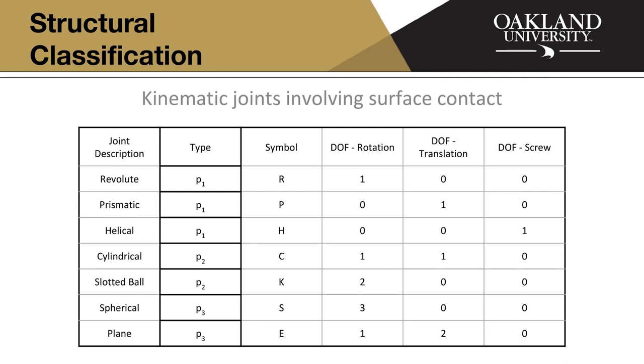Helical joint, which is a screw. Cylindrical joint, which is like a cylinder and a shaft. Slotted ball joint, which is like a ball that kind of rotates, but there's slots in it that define which direction it can rotate in. And then a spherical joint, which is like a true ball joint, which can rotate 360 degrees across three different axes. And then there's a plane joint.